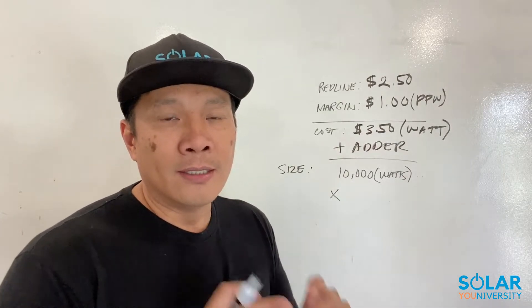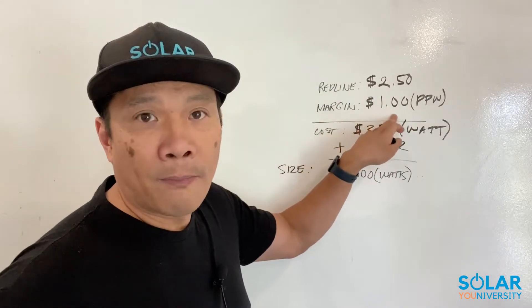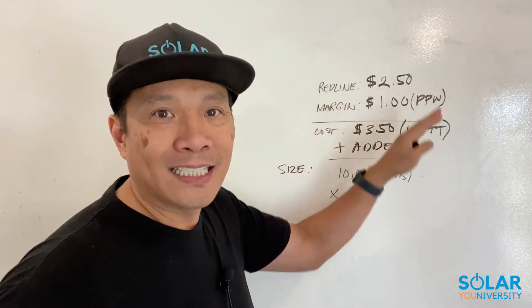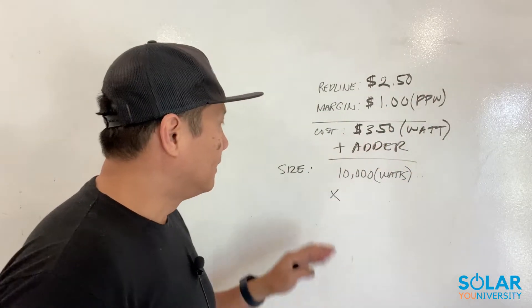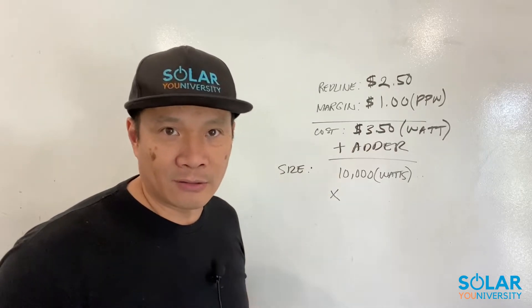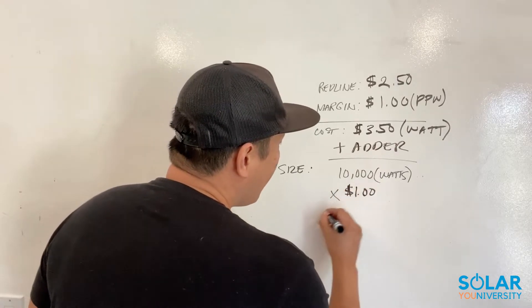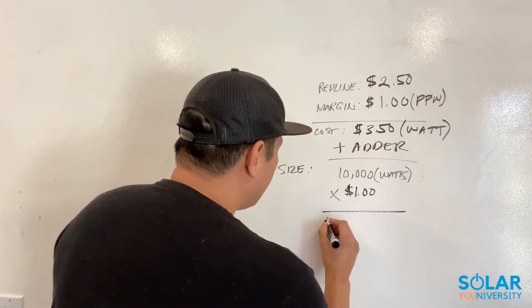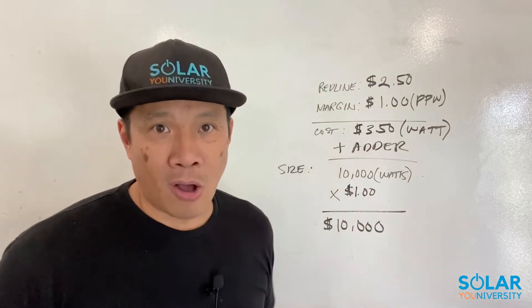So your commission in this example is $1 per watt. Ideally this is your sweet spot for making amazing income in solar. Let me show you how to calculate that: if the system size is 10 kW — meaning 10,000 watts — and your margin is $1 per watt, then 10,000 times $1 equals a $10,000 commission for this particular scenario.